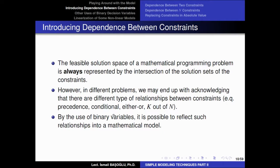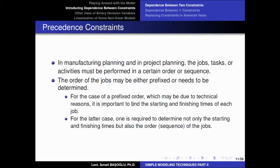It is going to be much better when you see these examples in practice. In all of these practices, the way that we are going to introduce such constraints with a dependence structure will be enabled by the use of a binary variable. We are going to use a binary variable and reflect such relationships in our mathematical model as the intersection of constraints. What we are meaning here will be understood in our first practice — the precedence constraints.